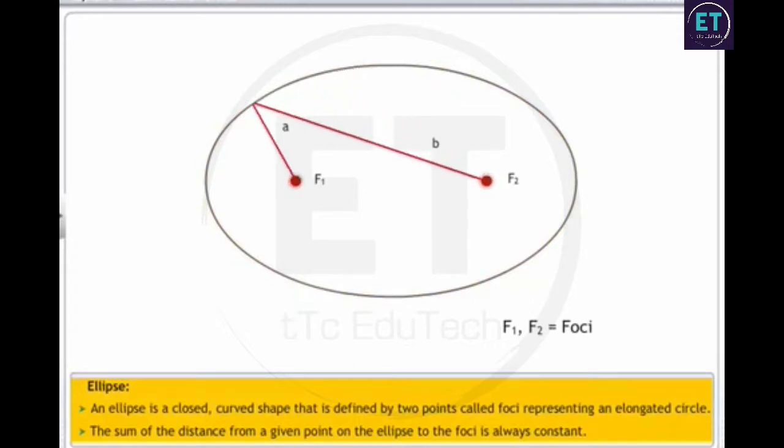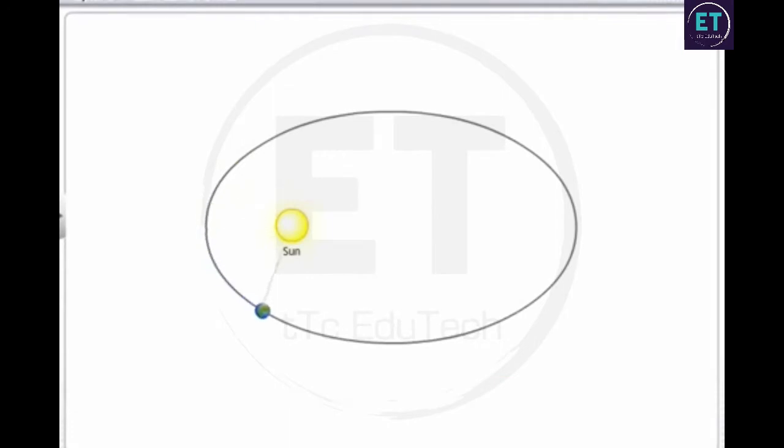The sum of the distance from a given point on the ellipse to the foci is always constant. In the given figure, a plus b is always constant. As you can see, in an elliptical orbit, the distance of the planets from the sun is not constant.